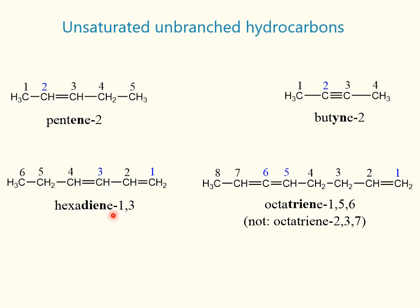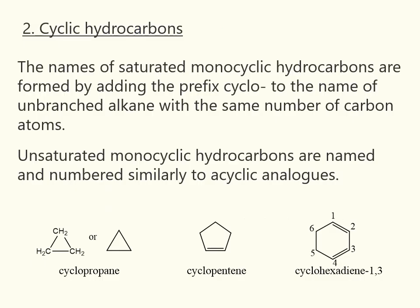Hexadiene has two double bonds. Octatriene has three double bonds. The names of saturated monocyclic hydrocarbons are formed by adding the prefix cyclo to the name of the unbranched alkane with the same number of carbon atoms.